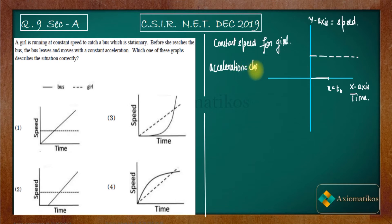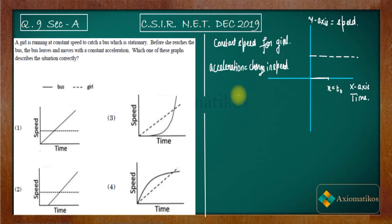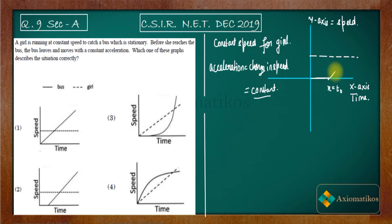After t₀, the bus moves with constant acceleration. Acceleration is change in speed with respect to time. If the change in speed is constant, then speed increases linearly with time — you must draw a straight line from t₀. So the bus is represented by a straight line starting at t₀, and the girl by a horizontal dotted line.